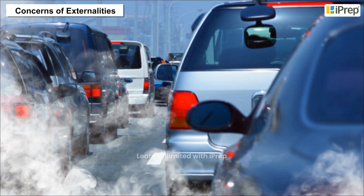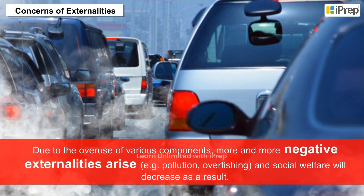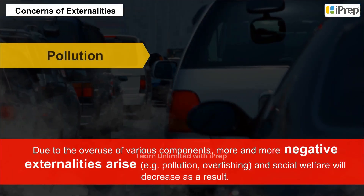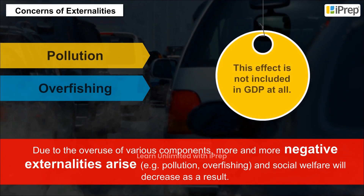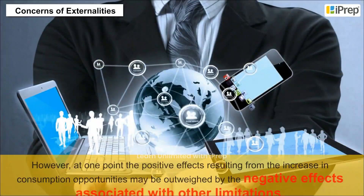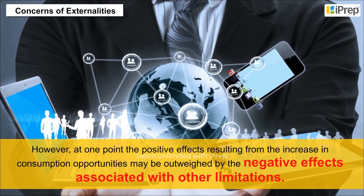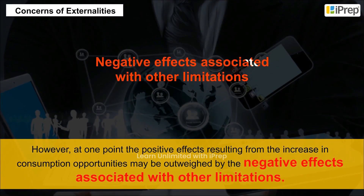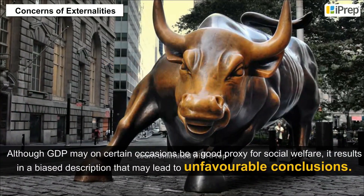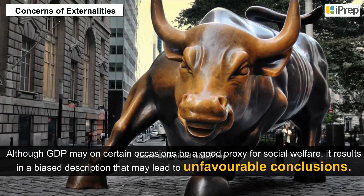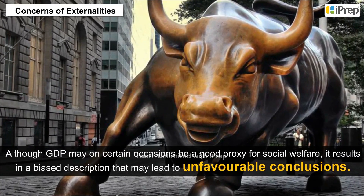Concerns of externalities: due to the overuse of various components, more and more negative externalities arise, such as pollution and overfishing, and social welfare will decrease as a result. This effect is not included in GDP at all. However, at one point, the positive effects resulting from the increase in consumption opportunities may be outweighed by the negative effects associated with these other limitations. Hence, although GDP may on certain occasions be a good proxy for social welfare, it results in a biased description that may lead to unfavourable conclusions.